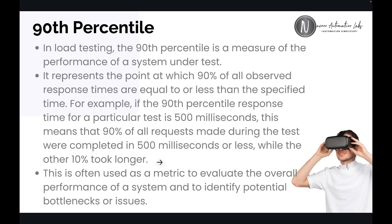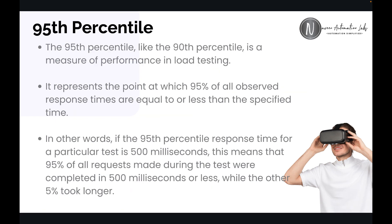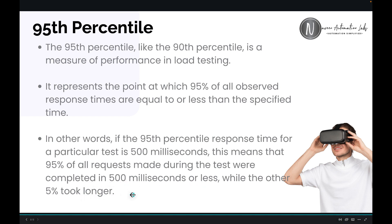This metric is very, very important. The 95th percentile is similar — it is a measurement of performance in load testing. It represents the point at which 95% of all observed response times are equal to or less than the specified time. For example, if the 95th percentile response time is 500 milliseconds, it means 95% of all requests made during the test were completed within 500 milliseconds or less, while the other 5% took longer.